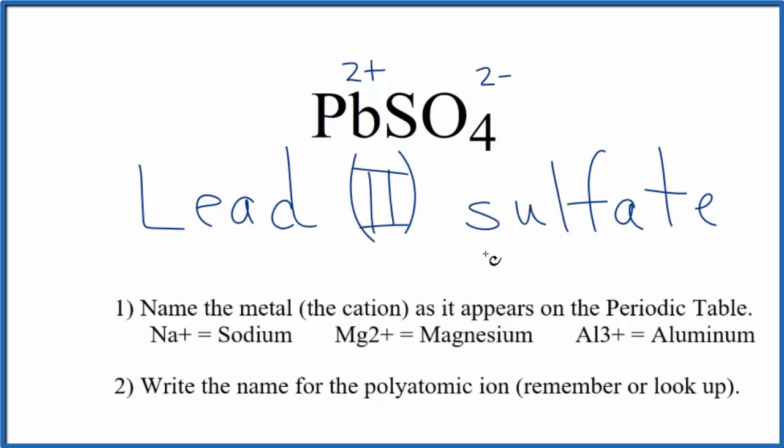If you were given the name and asked to write the formula, you'd recognize that lead has a 2+ ionic charge. You remember that sulfate is 2-, so you only need one lead atom and one sulfate ion for the charges to balance out. The formula is PbSO4.